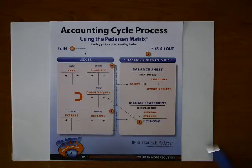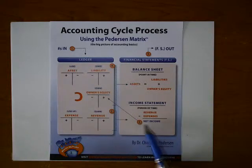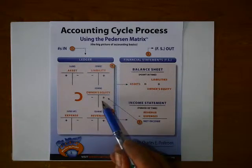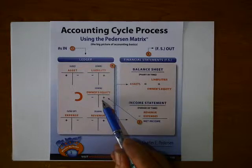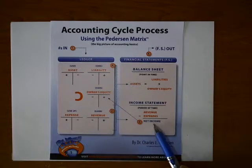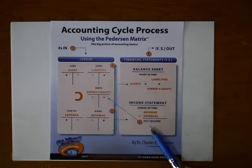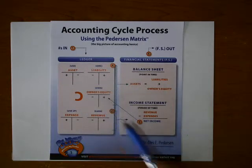The net income belongs to the owner. So step number three is to simply add the net income to the owner's account, owner's equity. Or, if it happens to come out to be a net loss, it's going to go on the negative side of owner's equity. We've transferred the net income to the positive side — that's step number three.